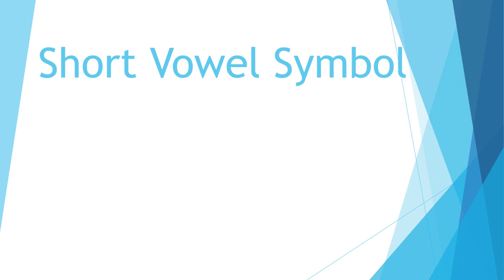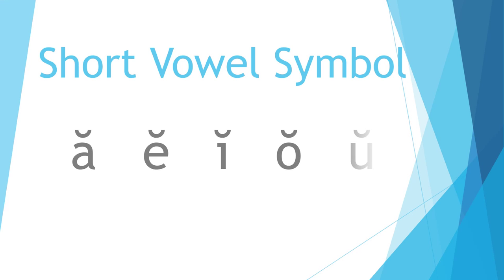Let's start with the short vowel symbol and sound. The short vowel symbol is a curved line above the vowel. This notation is usually seen when a word is being spelled phonetically — that means as it sounds. The short vowel sounds are: A, E, I, O, U.